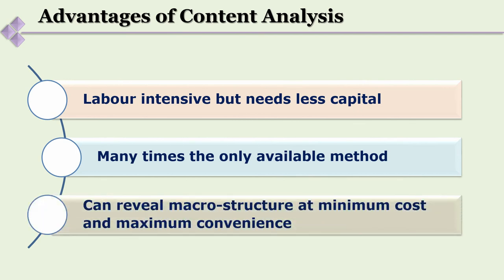Many times content analysis may be the only method available. For example, Jawaharlal Nehru's autobiography and letters are the only things available to understand how he felt and what he wanted to communicate. The same is true for Mahatma Gandhi. Often, the available content is a very important source of data. Content analysis can give us macro structures at minimum cost and maximum convenience — examining 'My Experiments with Truth' tells you a lot about Mahatma Gandhi without spending a penny, and reveals how he felt and the context in which he wrote.